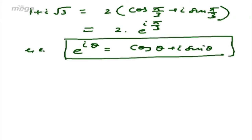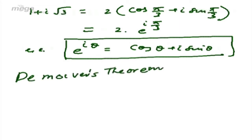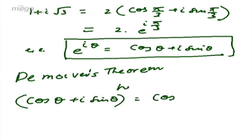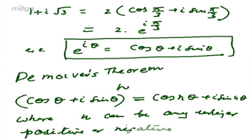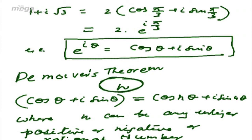The polar form of the complex number is very important for solving difficult problems based on complex numbers. A key theorem is De Moivre's theorem, which states that (cos theta plus i sine theta) to the power n can be written as cos n theta plus i sine n theta, where n can be any integer — positive or negative — or any rational number.